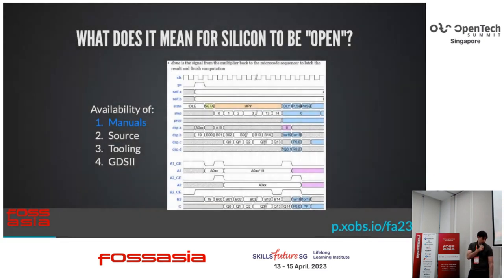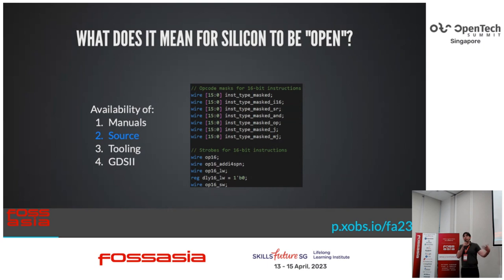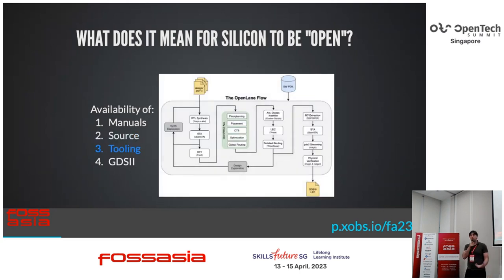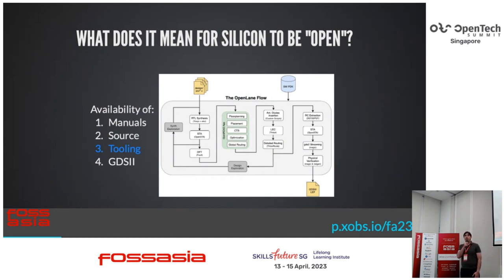We need the source code to the CPU, which includes things like the Verilog, VHDL, or Scala that went into actually defining the CPU. Even if you just have the source code, there is some value in seeing how the CPU is built. As an example, there's a chip called Propeller, which has like 16 cores in it, and they actually release the Verilog for the CPU for an actual physical chip you can buy. Also important is the tooling. If I give you a C program and I don't give you the compiler, there's not much you can do with it.